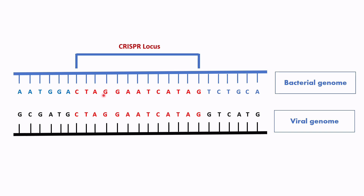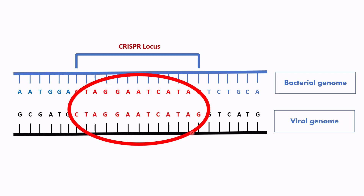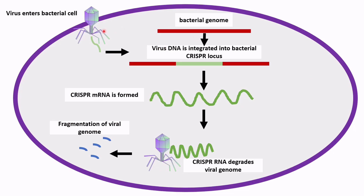The gene sequence of CRISPR is pretty much similar to the virus genome. When a new virus attacks a bacterial cell, the viral genome gets integrated into the bacterial CRISPR locus due to this sequence similarity.